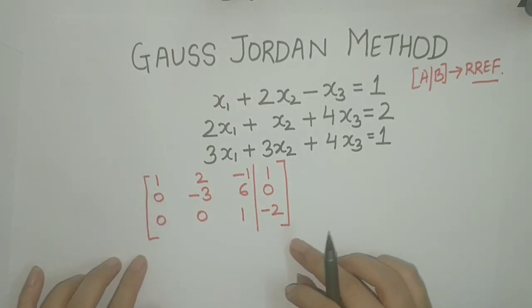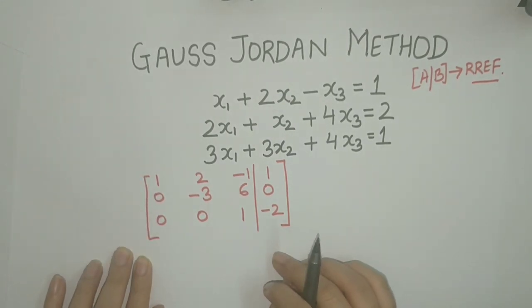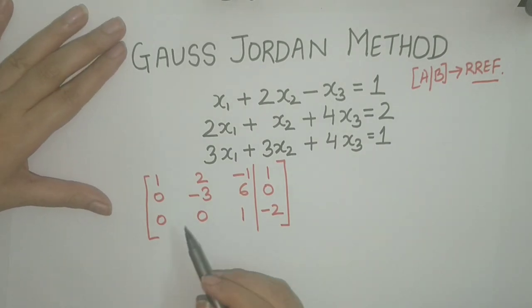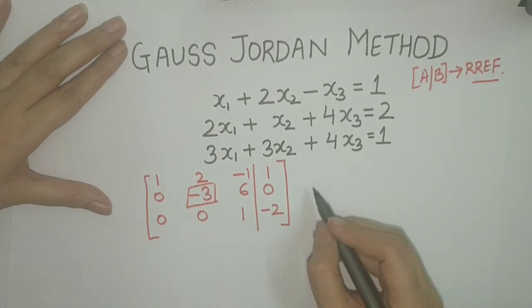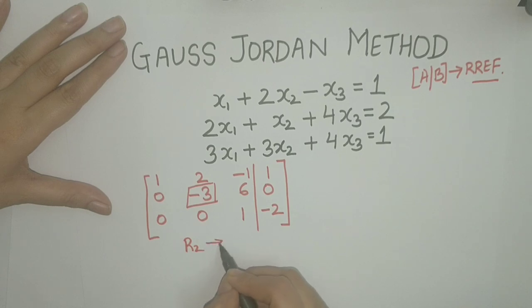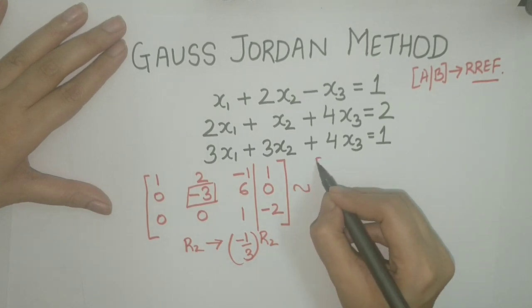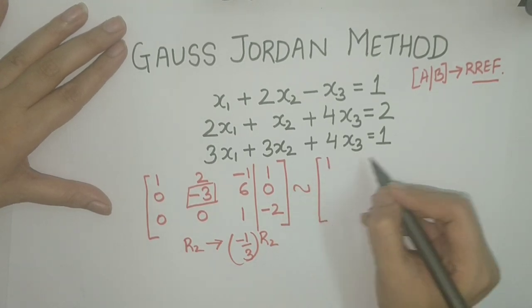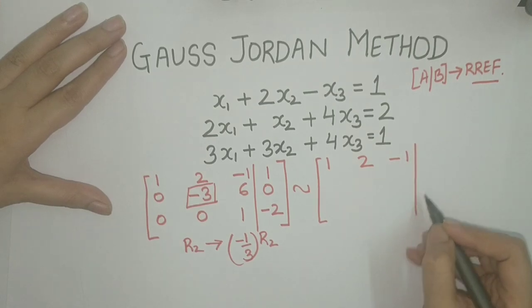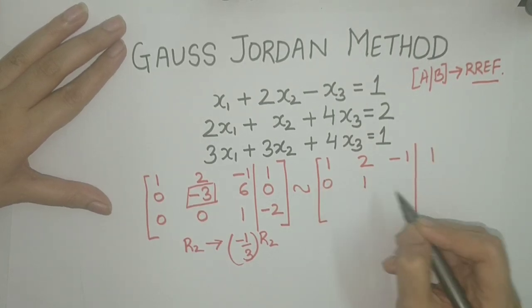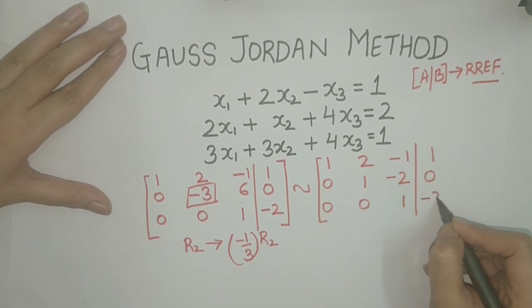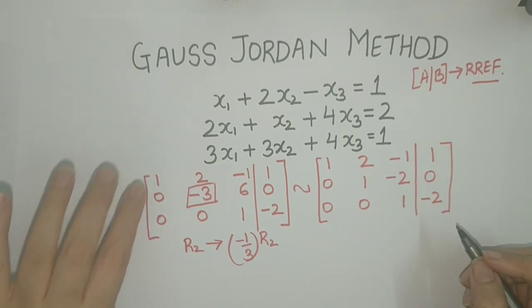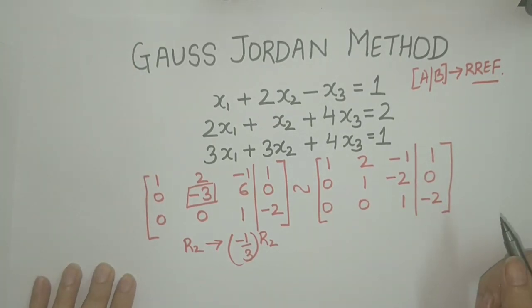Since we need to reduce this matrix to reduced row echelon form, we make the leading entries equal to 1. The only leading entry not equal to 1 is −3, so we apply R2 → (−1/3)R2. The system now becomes equivalent to [1, 2, −1 | 1; 0, 1, −2 | 0; 0, 0, 1 | −2]. The next step is to make entries above the leading entries zero.